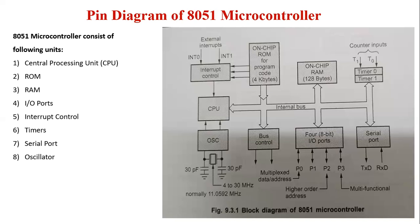The third unit is RAM. The 8051 microcontroller has 128 bytes of internal RAM. This is a volatile memory, meaning its contents will be lost if power is switched off. These 128 bytes are divided into 32 working registers constituting 4 register banks — Bank 0 to Bank 3 — with each bank consisting of 8 registers from R0 to R7.